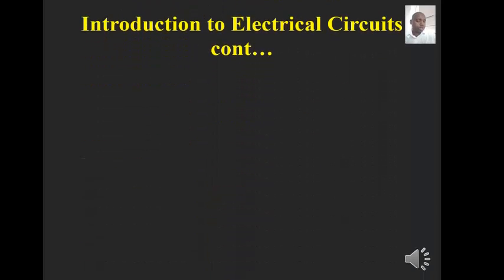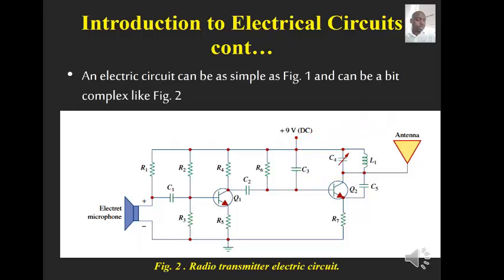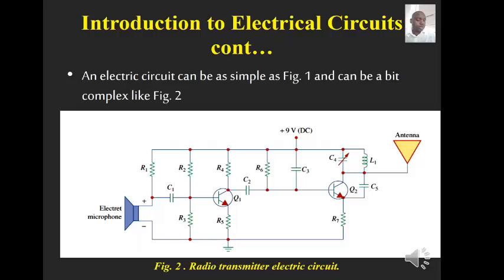You can also have complex electric circuits which have resistors, capacitors, and transistors. But these are not all the components you can have in an electric circuit — there can be more, some formed into ICs and so on. But in this course, we deal with capacitors, resistors, and inductors.